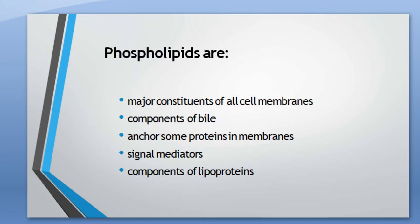Normally, phospholipids are the major constituents of all cell membranes. The cells which have cell membranes — the major constituents of which we call the bilayer, the lipid bilayer cell membranes — are made up of phospholipids. Phospholipids are also components of bile and are used to anchor proteins in the membrane. They are also signal mediators and are components of lipoproteins.